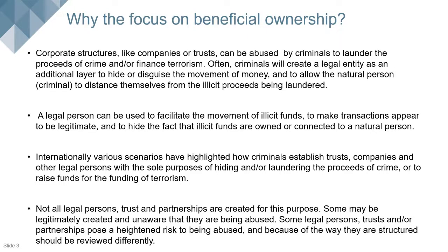Criminals do this in various ways — they establish banking accounts, move funds through representative companies using various types of accountable institutions. We see this happening not only on a domestic scale but also internationally. There are various examples showing that criminals use shell companies and front companies as a means of laundering illicit funds. It is very important for the accountable institution to understand exactly who they're dealing with — who owns and who ultimately benefits from that legal person.